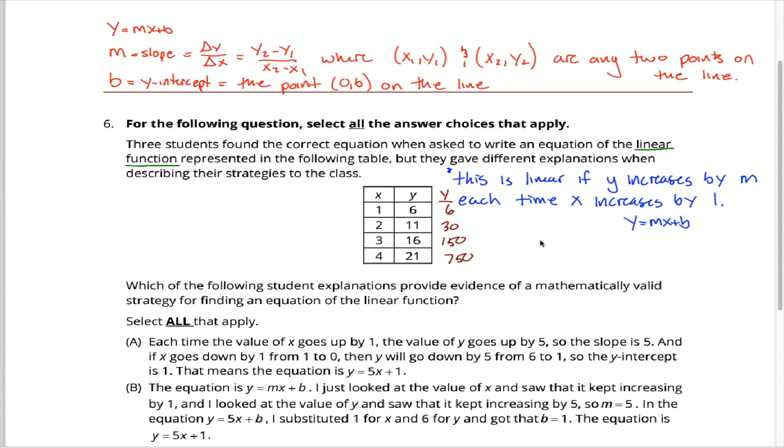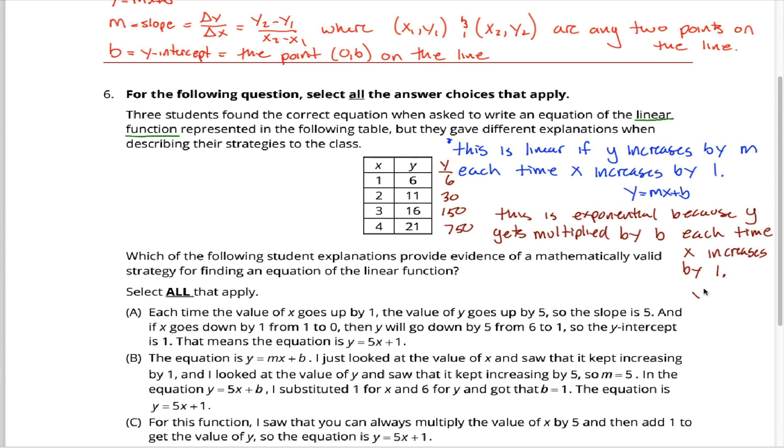Instead of being of the form y equals mx plus b, it would be of the form y equals a times b to the x power. And the b here represents how much the y-coordinate gets multiplied by each time x increases by 1. So in this case, the b would be equal to 5. Don't confuse the b here with the b here. They're very different. This b is the y-intercept. Confusingly, this a down here is the y-intercept. The m up here is the slope, which is kind of like the b down here, which doesn't have a name. The b up here is the y-intercept, which is a lot like the a down here, which is the y-intercept. In either case, it's the y-coordinate when the x-coordinate equals 0.